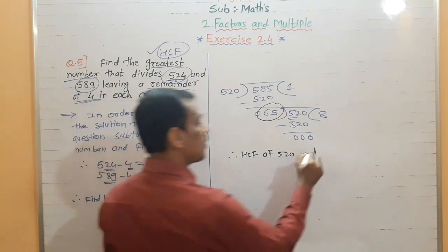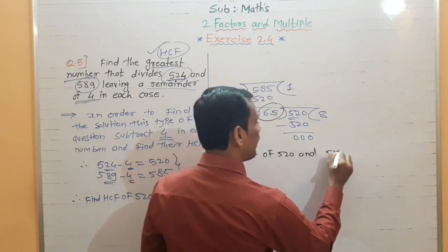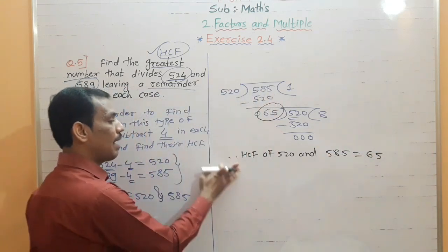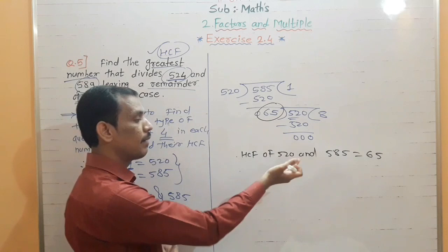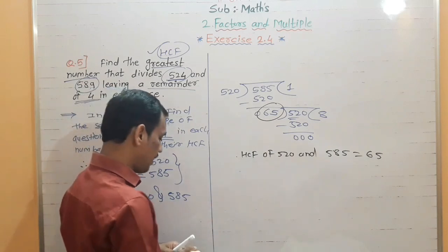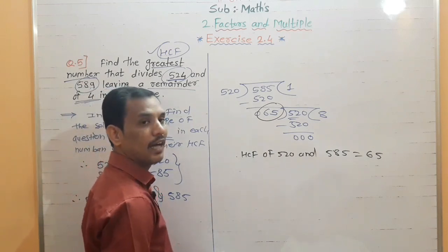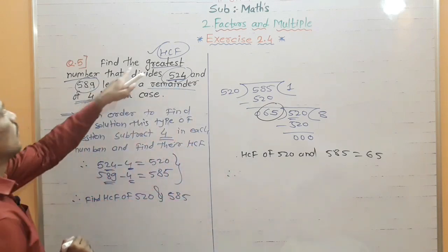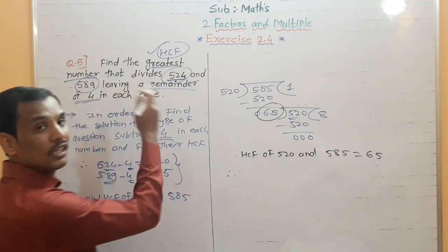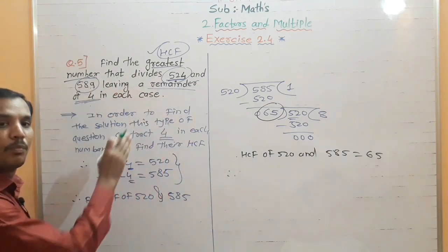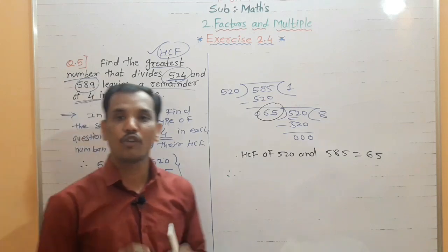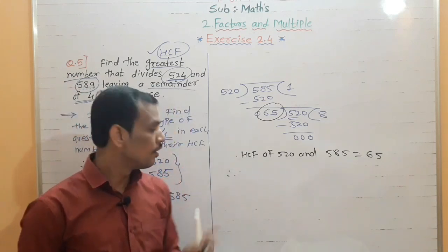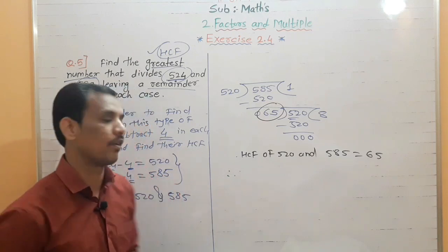So 520 and 585 gives HCF equal to 65. Now at the end we write down the answer to the question. Therefore, the greatest number — students, when you solve a word problem you must always write the last concluding line.